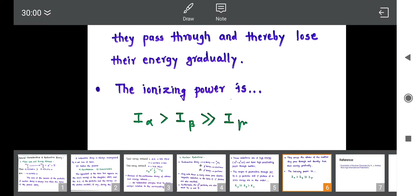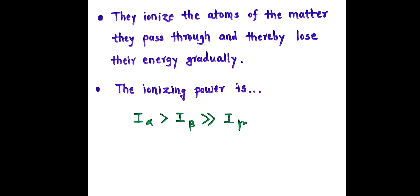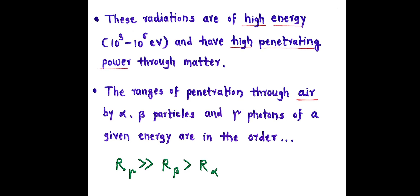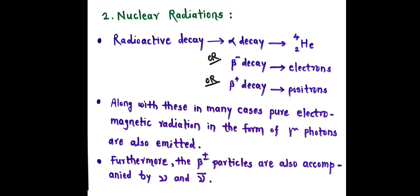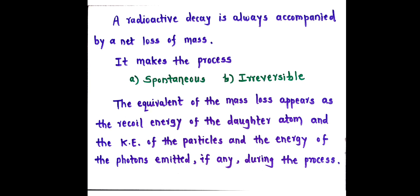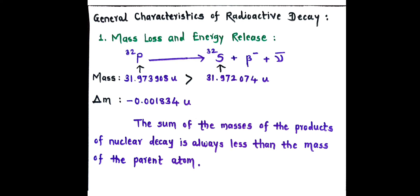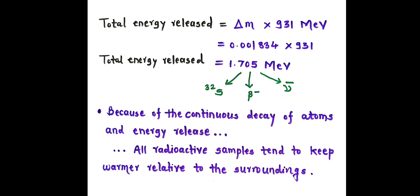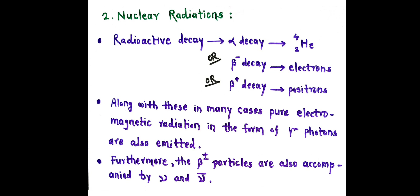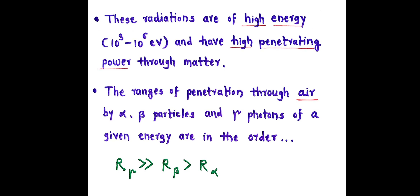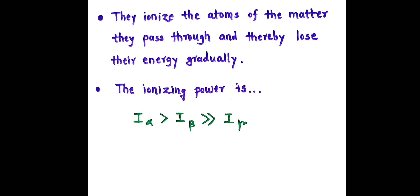This is about the general characteristics of radioactive decay. The first characteristic is mass loss and energy release — that is, during radioactive decay there is a mass loss as well as energy release. The second characteristic is nuclear radiations. Thank you.